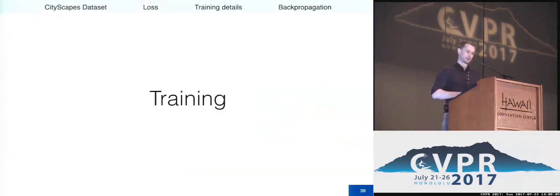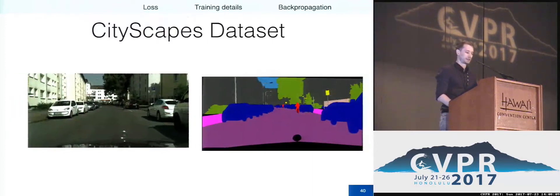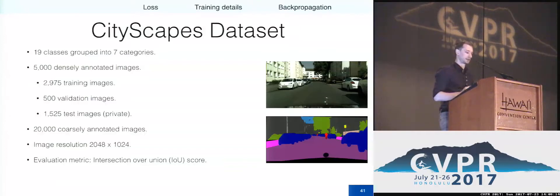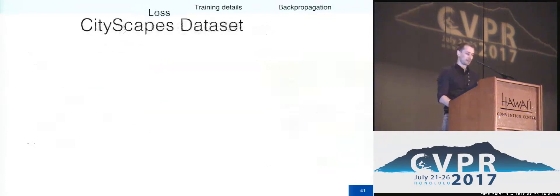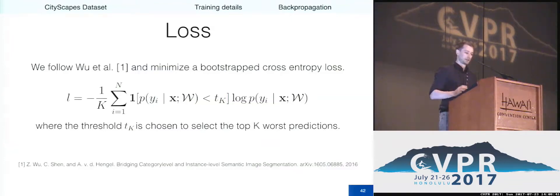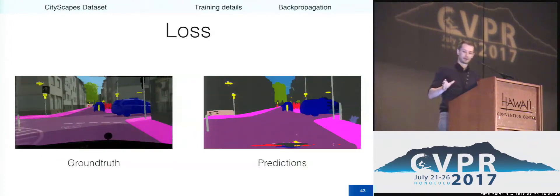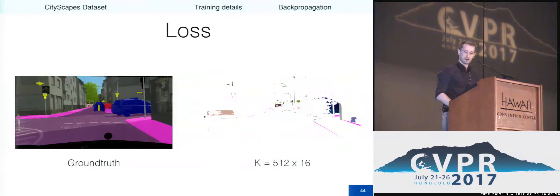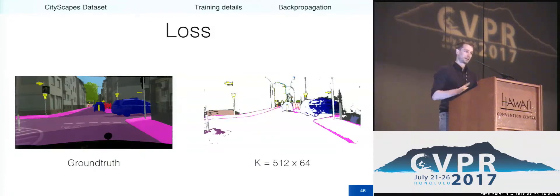For training, since this work is about semantic segmentation in street scenes, we train on the Cityscapes dataset, which has 5,000 densely annotated images split into training, validation, and testing. We train only on the training set, do early stopping on the validation set, and the benchmark is computed on the private test set. We learn weights using a bootstrap cross-entropy loss, where instead of computing the pixel-wise cross-entropy loss over the entire high-resolution image, we only compute the loss over the k worst predictions — either misclassified pixels or those where the correct class is predicted with low probability. If you do dense predictions, this loss is highly recommended.